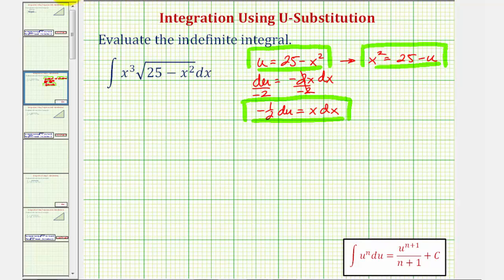let's rewrite this as the integral of x times x squared. There's our x cubed. And let's write the square root of 25 minus x squared as the quantity 25 minus x squared to the one-half dx.